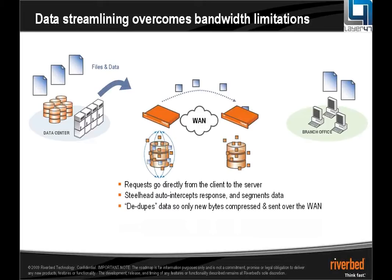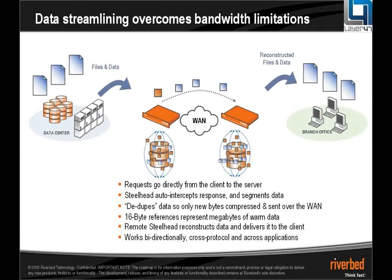This is good, but it gets better as we start building up references in our store — our dictionary. Say another user in that office requests the same file. That request goes into the server, which responds with the intention of sending all that data across the network again. This time, the Steelhead will intercept it, recognize that data, and instead of sending the raw data, send the references we've already created. Those references are sent across to the Steelhead at the other end, which pulls the data from its own hard drive, puts the file back together, and serves it on to the client.